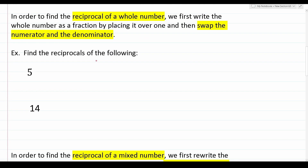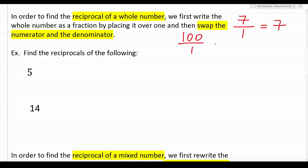Now that we've found the reciprocals of some fractions, let's talk about finding the reciprocals of whole numbers. In order to find the reciprocal of a whole number, we first write the whole number as a fraction by placing it over one, and then swap the numerator and the denominator. Any whole number can be written as a fraction — for example, seven over one equals seven, and 100 over one equals 100.